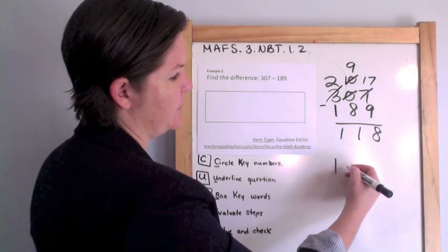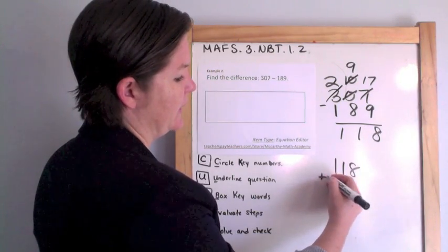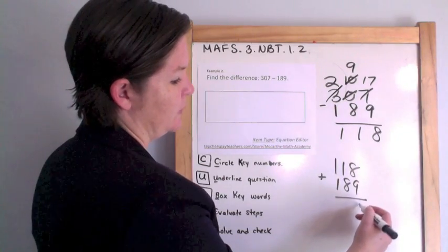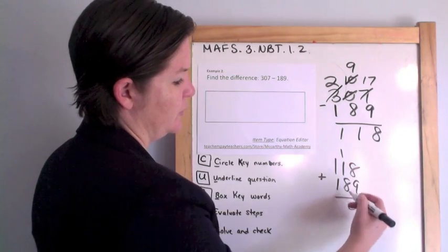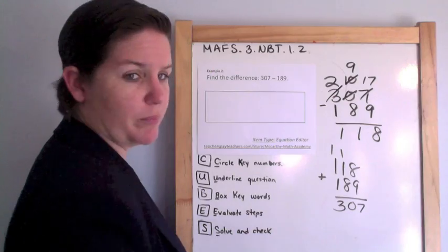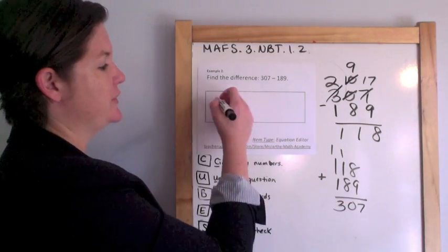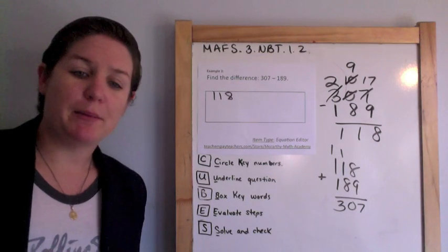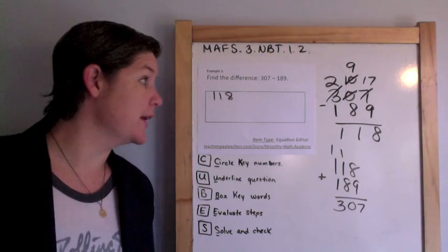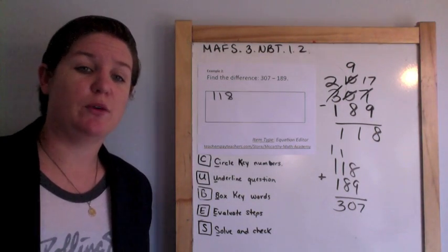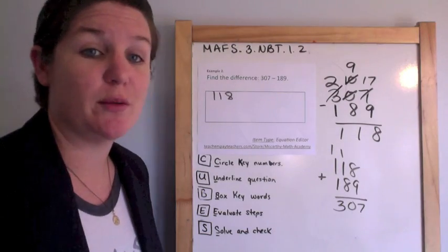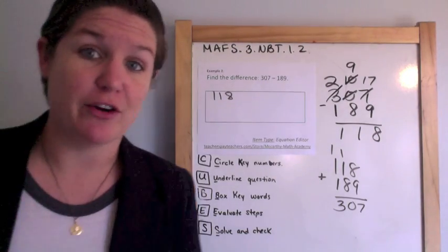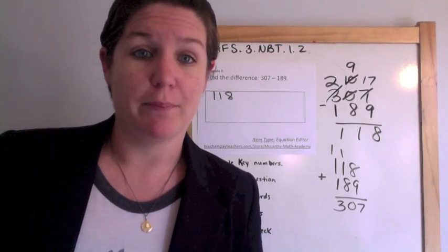I did that right. You can always check to see if you did it right by adding. That's right. Make sure you don't write 307. The difference is 118. And I'm going to put a link in the description box for a website that you can go to to get some more practice with subtraction with regrouping, because I know my third graders have a hard time with that.